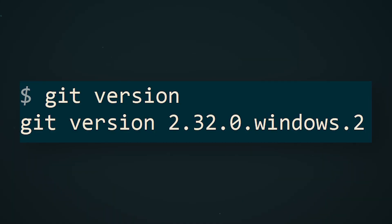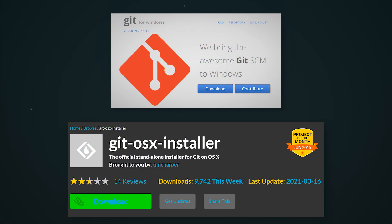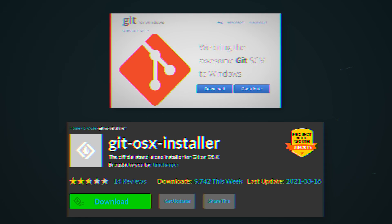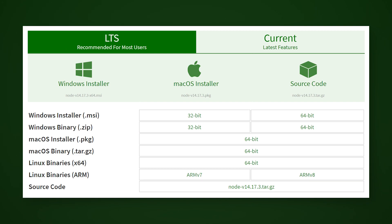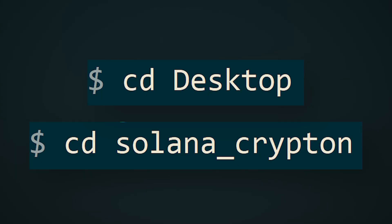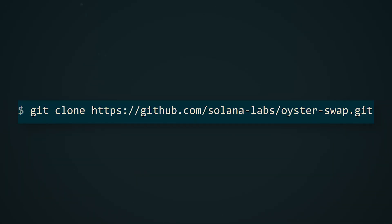First, you need to install the git tool if you don't already have it. You can check this with the command git version. If instead of a version number you see an error in the output, you need to install git by downloading the git installer for Windows or macOS from the link in the description. In the case of Linux, git will most likely already be installed. Then use the link in the description to install Node.js for your system. After installing Node.js, restart your command line or terminal and go to the folder we created in the last video. Copy the GitHub repository — the link to which you will find in the description — using the command git clone, then go to the folder with the cloned repository.